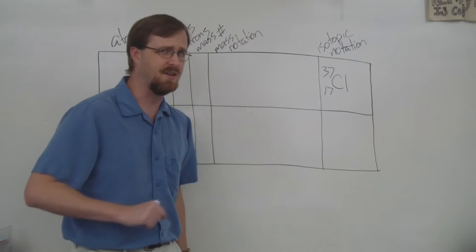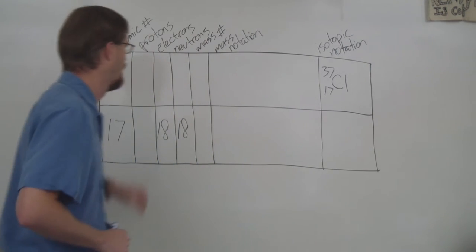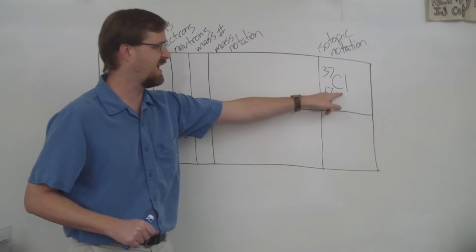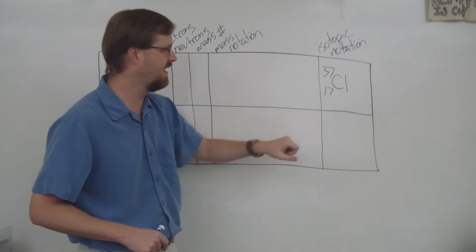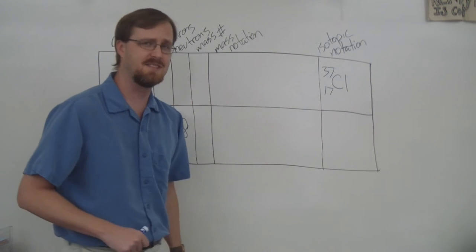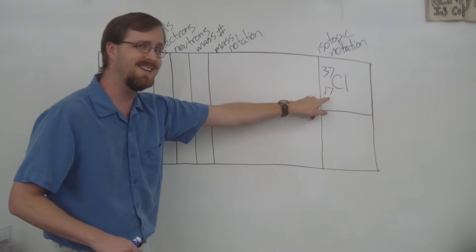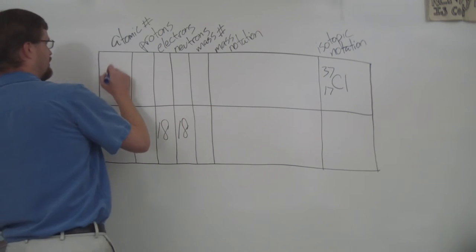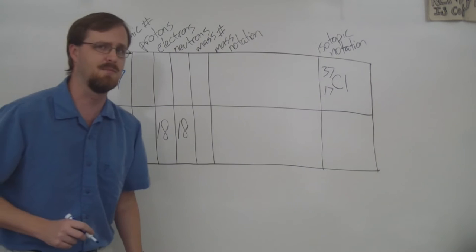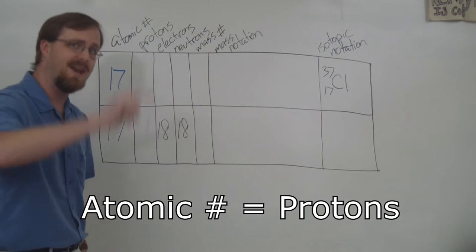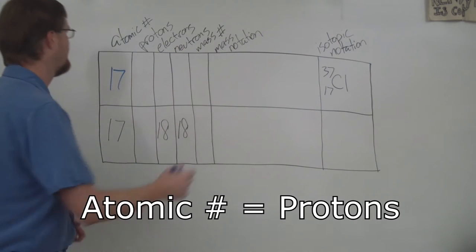Let's take a look at our first one. We have Cl, which is chlorine, and 37 over 17. Well, this number right here is the atomic number, so 17 is the atomic number. The atomic number and the number of protons are the same number, so here we go: 17.